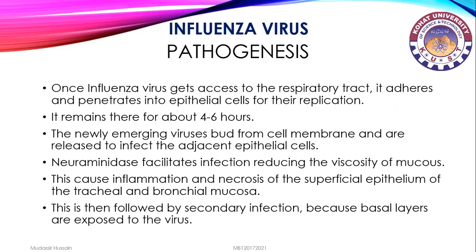Pathogenesis: once influenza virus gains access to the respiratory tract, it adheres and penetrates into epithelial cells for replication. It remains there for about four to six hours. The newly emerging viruses bud from the cell membrane and are released to infect adjacent epithelial cells. Neuraminidase facilitates infection by reducing the viscosity of mucus, causing inflammation and necrosis of the superficial epithelium of the tracheal and bronchial mucosa, followed by secondary infection as basal layers are exposed.